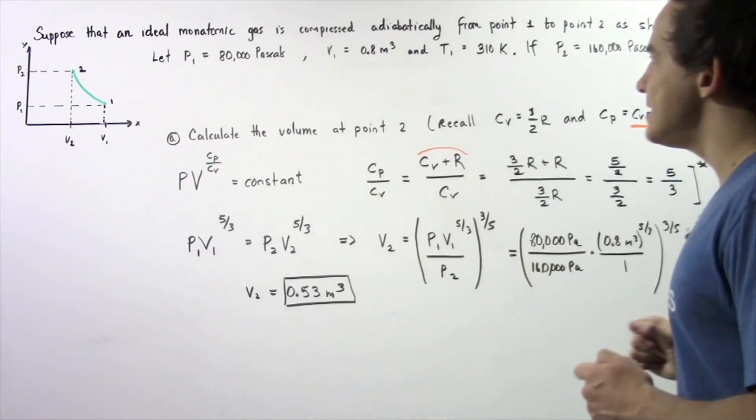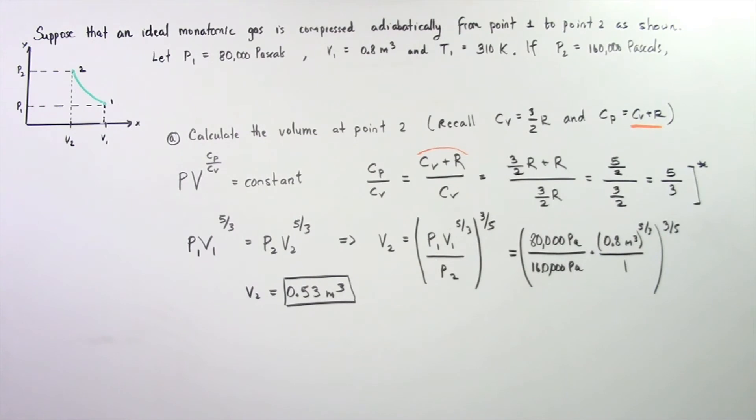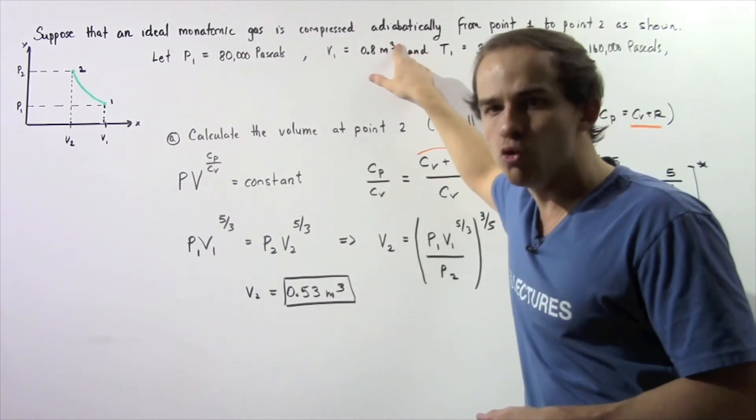We know P1 is equal to 80,000 Pa and we know that P2 is equal to 160,000 Pa. So the Pa will cancel. Our V1 is given to be 0.8 meters cubed, so we plug in that value.